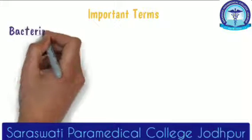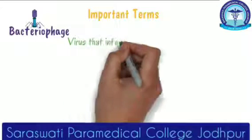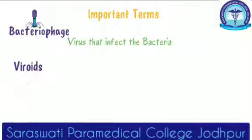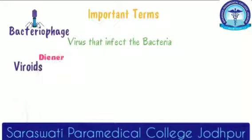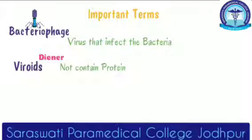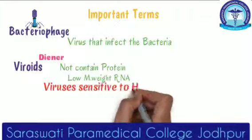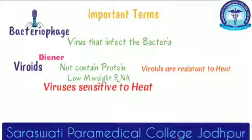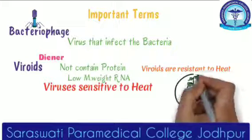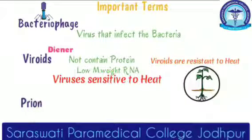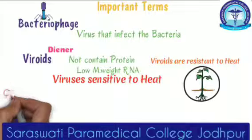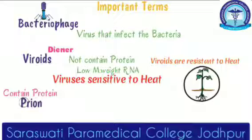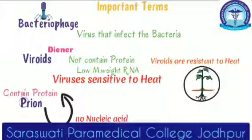Some other important terms: a bacteriophage is a virus that infects bacteria. Another term is viroid, introduced by Diener — viroids are basically free from proteins and are low molecular weight RNA. They are resistant to heat — remember, viruses are very sensitive to heat while viroids are resistant. Viroids mainly cause disease in plants. Another entity is prions — the P of prions means protein — so prions basically contain only protein and do not contain nucleic acid.